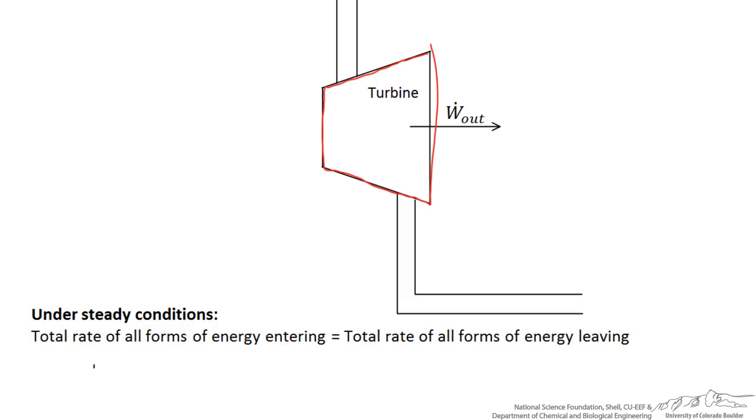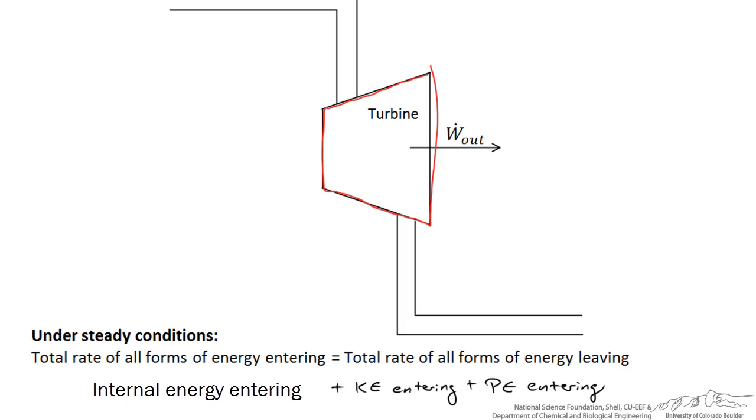There are various ways energy can get into the turbine. We can have internal energy entering, there can be kinetic energy of the fluid entering, and potential energy of the fluid entering. So these three forms of energy enter the turbine at this location.